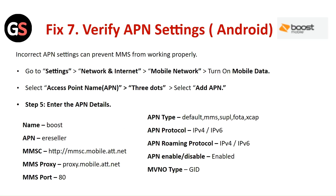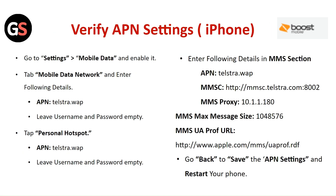Fix Seven: Verify the APN settings. For Android, incorrect APN settings can prevent data from working properly. Go to Settings, then Network and Internet, then Mobile Network, and turn on Mobile Data. Select the Access Point Name, tap on the three dots, and select Add APN. For iPhone, go to Settings, then select Mobile Data and enable it. Tap on Mobile Data Network and enter the required details. Go back to save the APN settings and restart your phone.